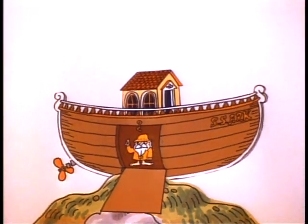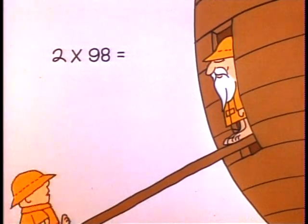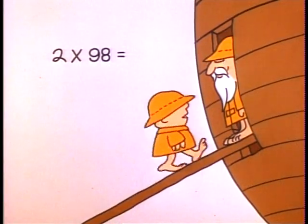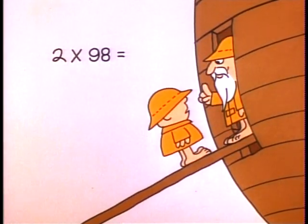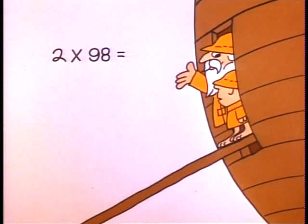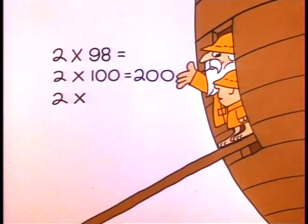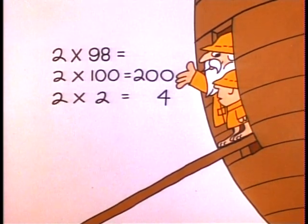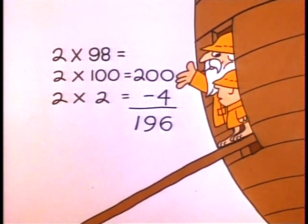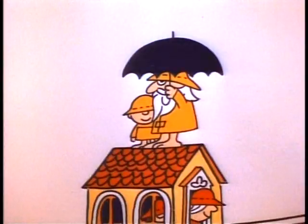Now, what's two times ninety-eight? Aw, that's hard! No, it's very simple — two times ninety-eight equals two times a hundred minus two times two. That's two hundred minus four: a hundred and ninety-six. Elementary!